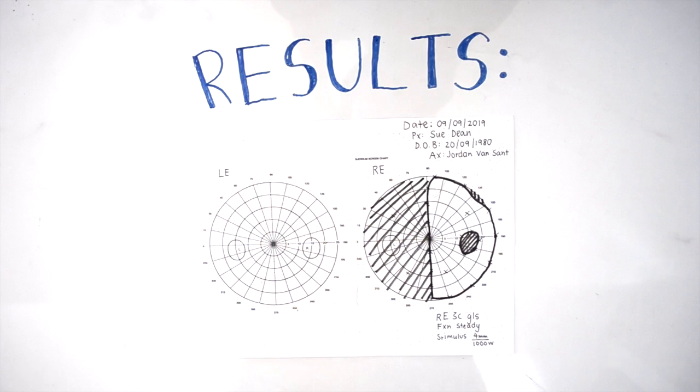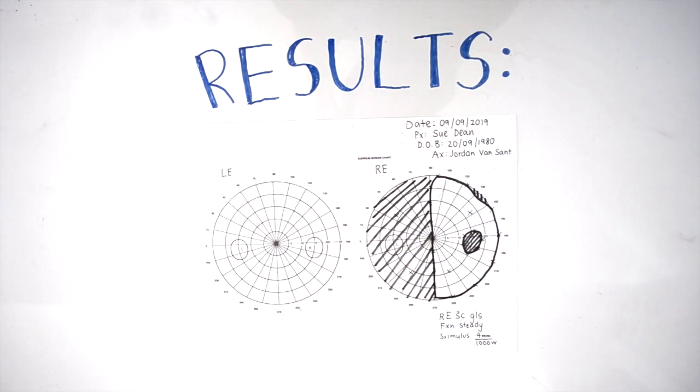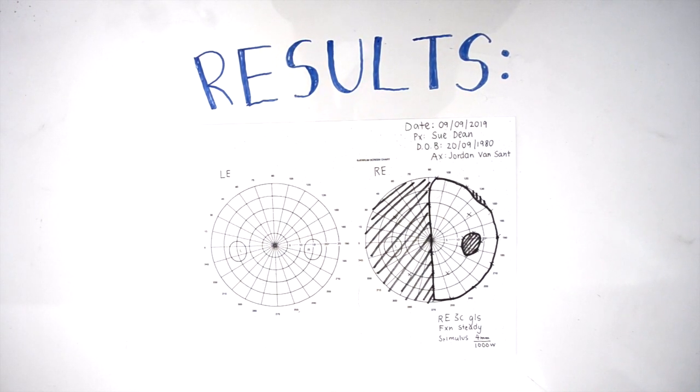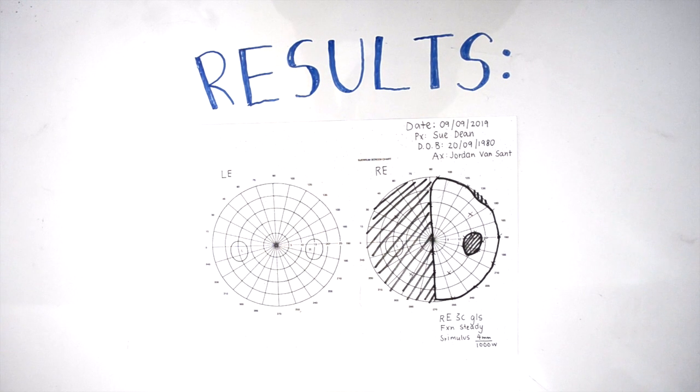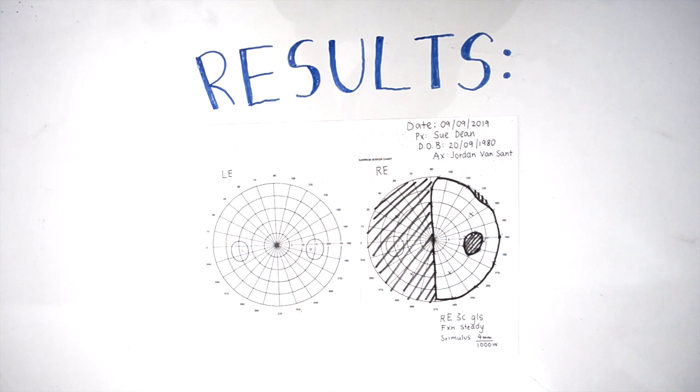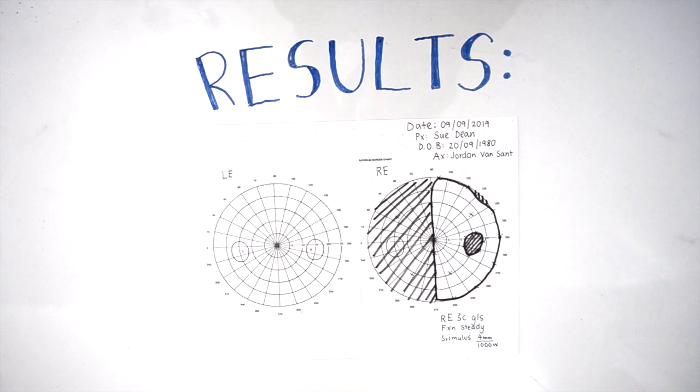As seen here, Ms. Dean demonstrated a left hemianopia of the right eye. This visual defect further indicates that Ms. Dean has an underlying problem causing impairment to her visual field. This could potentially be a lesion compressing on Ms. Dean's visual pathway.